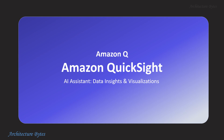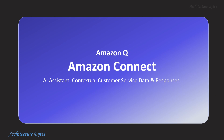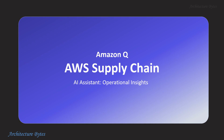Amazon Q in QuickSight enhances BI users' productivity to build visuals, summarize insights, and answer data questions — all using natural language. Amazon Q in Connect helps customer service agents by using real-time conversations with relevant company data to automatically recommend agent responses and actions. Amazon Q in AWS Supply Chain empowers supply chain professionals to ask intelligent questions, gain insights into their operations, and explore alternative scenarios for informed decision making.